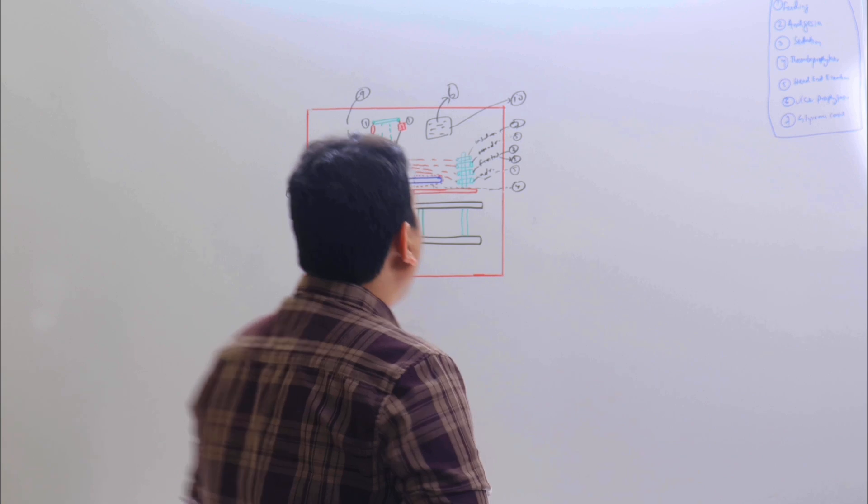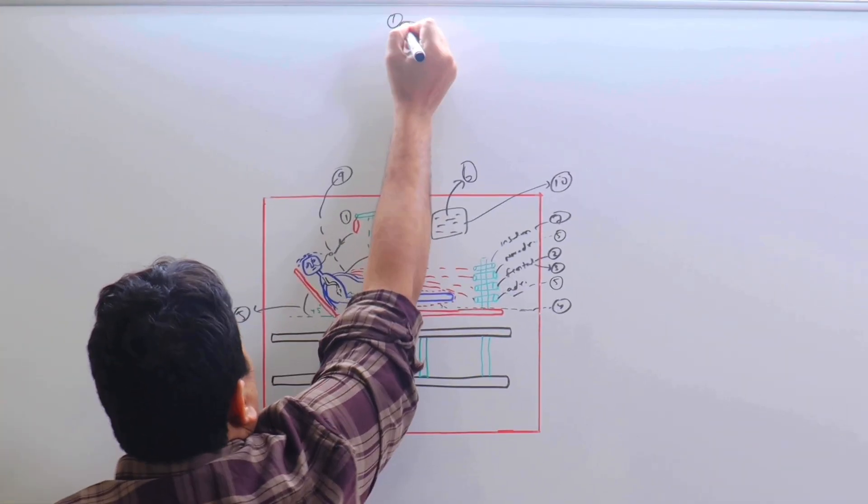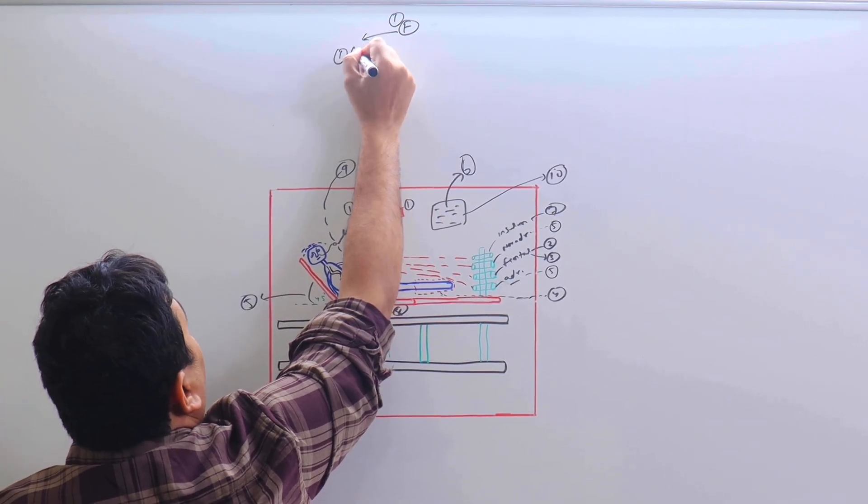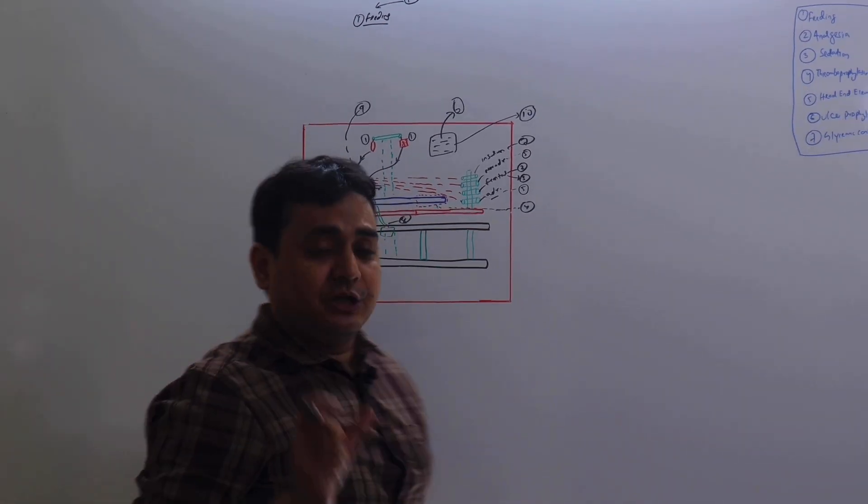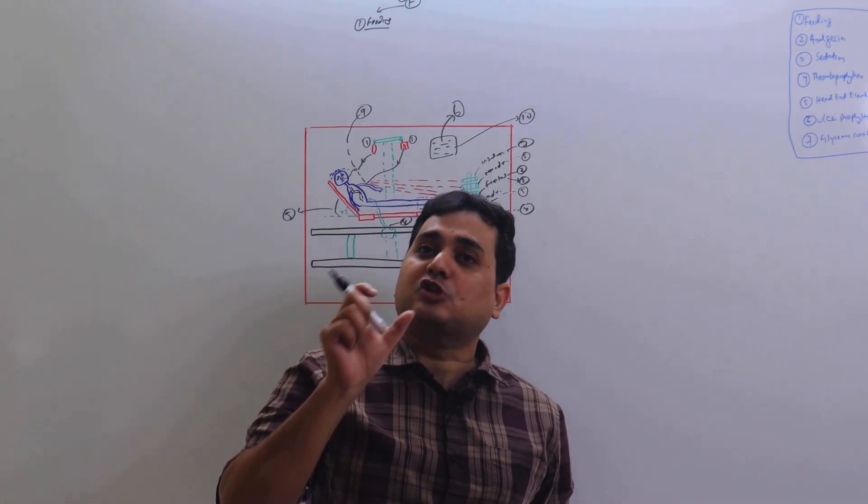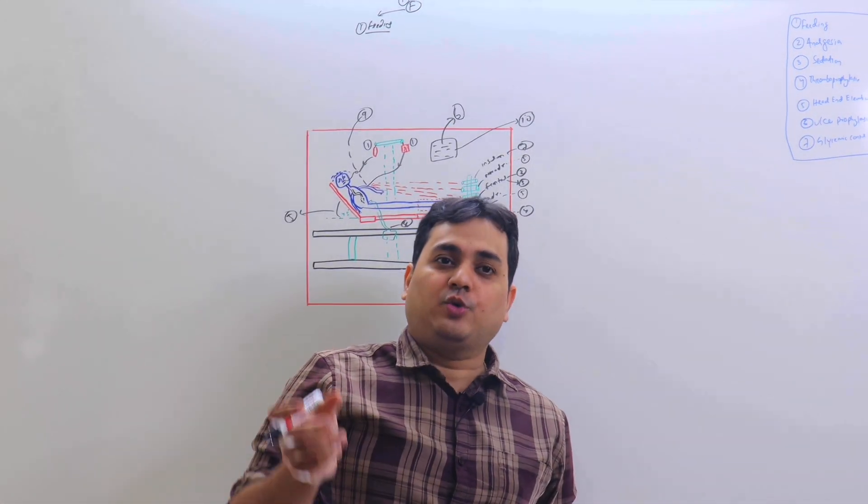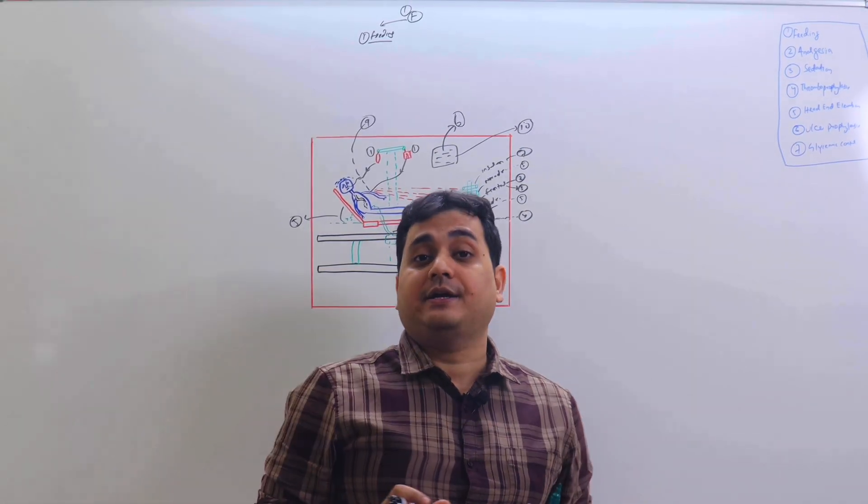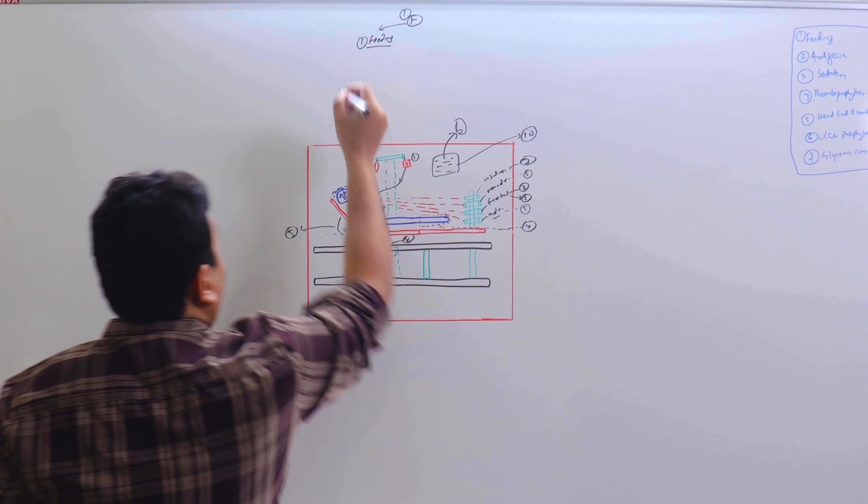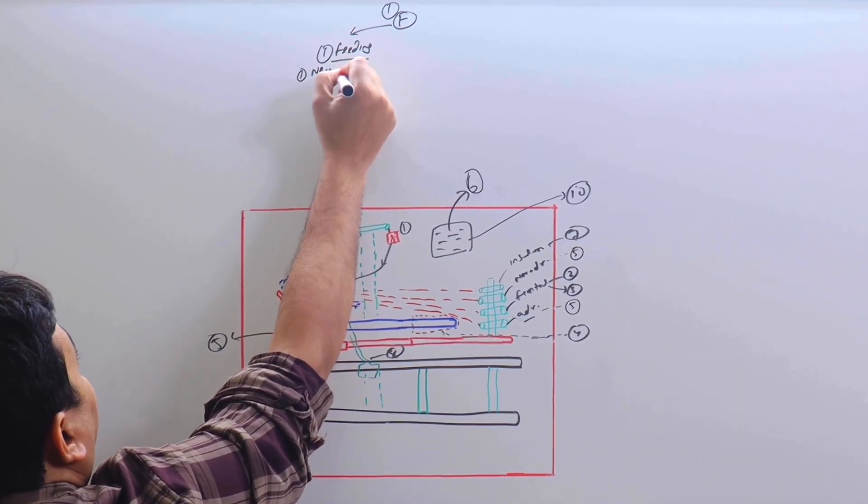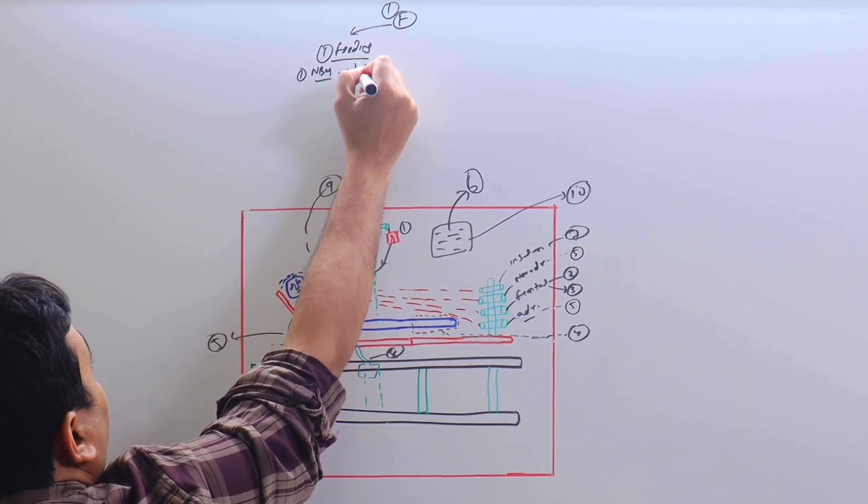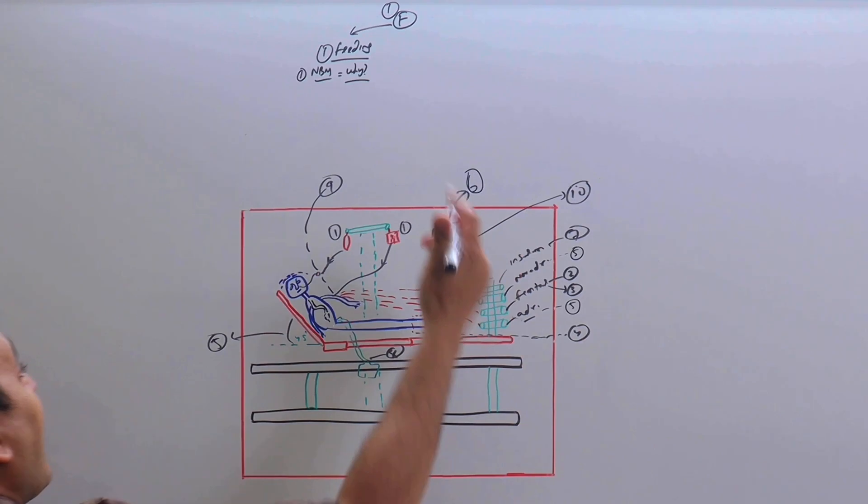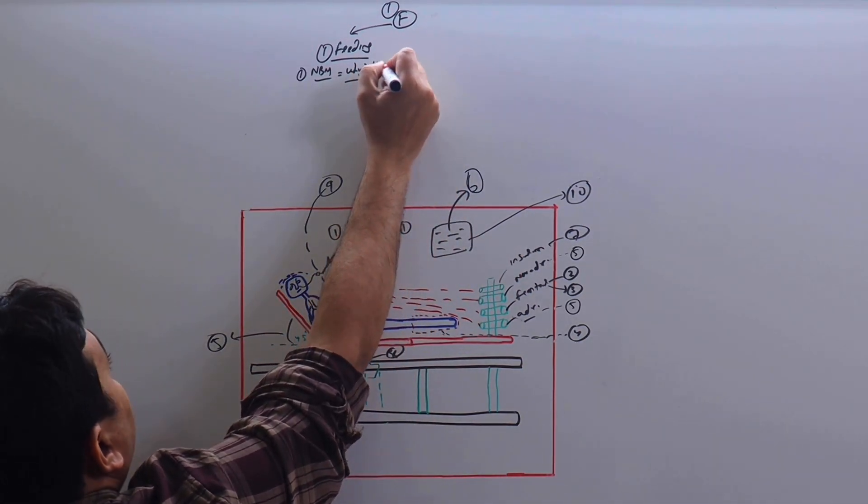Number one point is F. F stands for feeding. Every patient in the ICU must be receiving some kind of feeding, whether it is enteral or parenteral or something else. Either NPO—we have to mention why if you are satisfied with the reason why. The next question is how long the patient should be NPO, because you should start feeding as soon as possible.